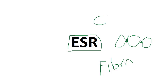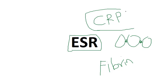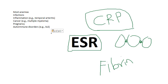ESR is often co-tested with CRP levels, which means C-reactive protein, which is an acute phase protein secreted by the liver in inflammations. Coming to some causes of increased ESR, these are the most common causes.